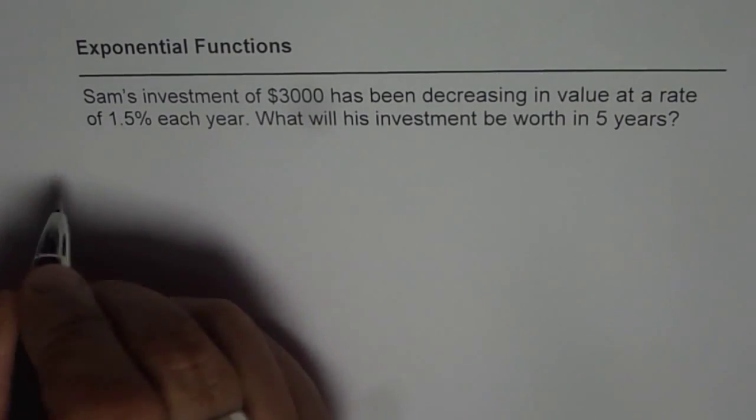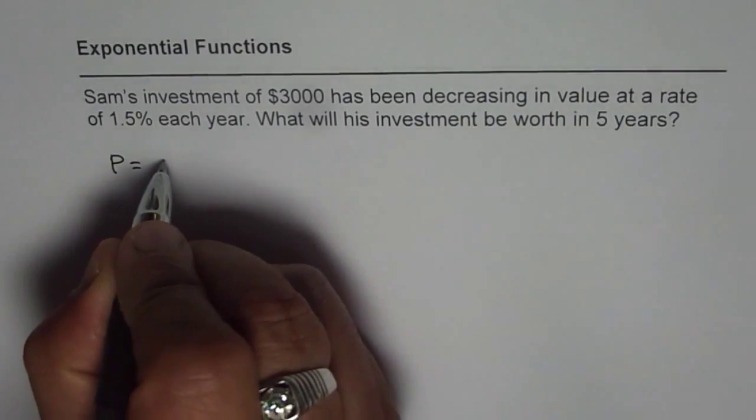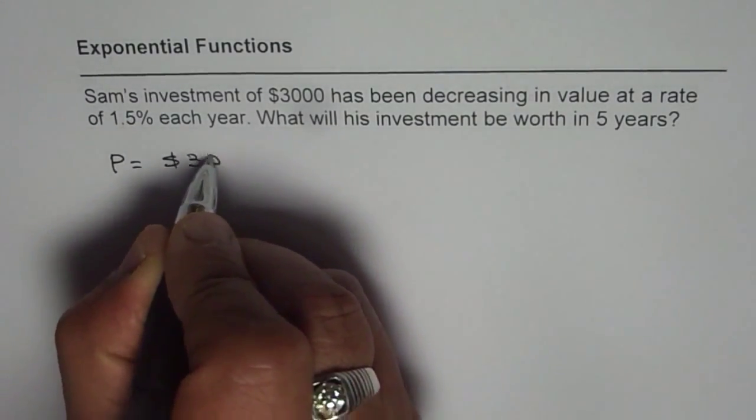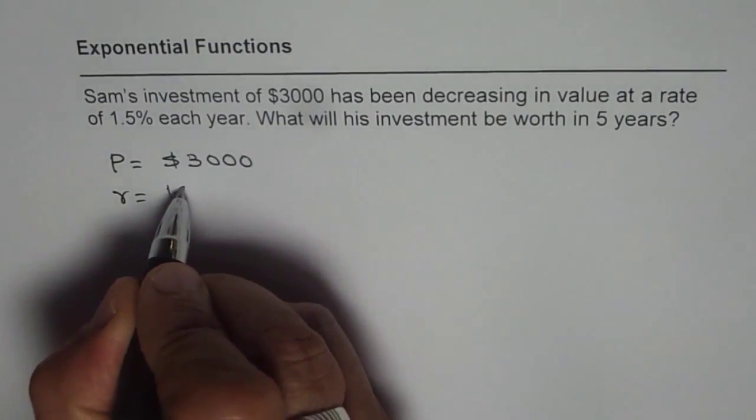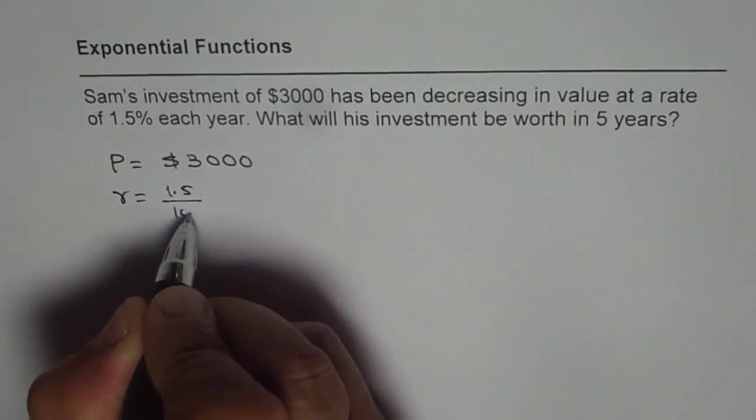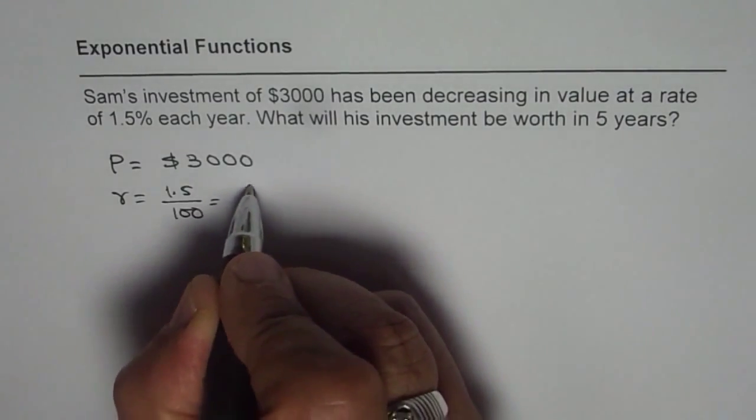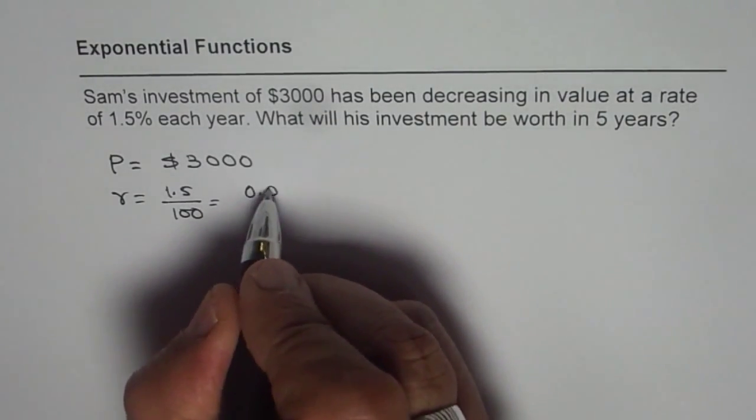What we are given here is the principal amount of $3,000 and depreciation rate is 1.5% or 1.5 over 100, which will be 0.015.